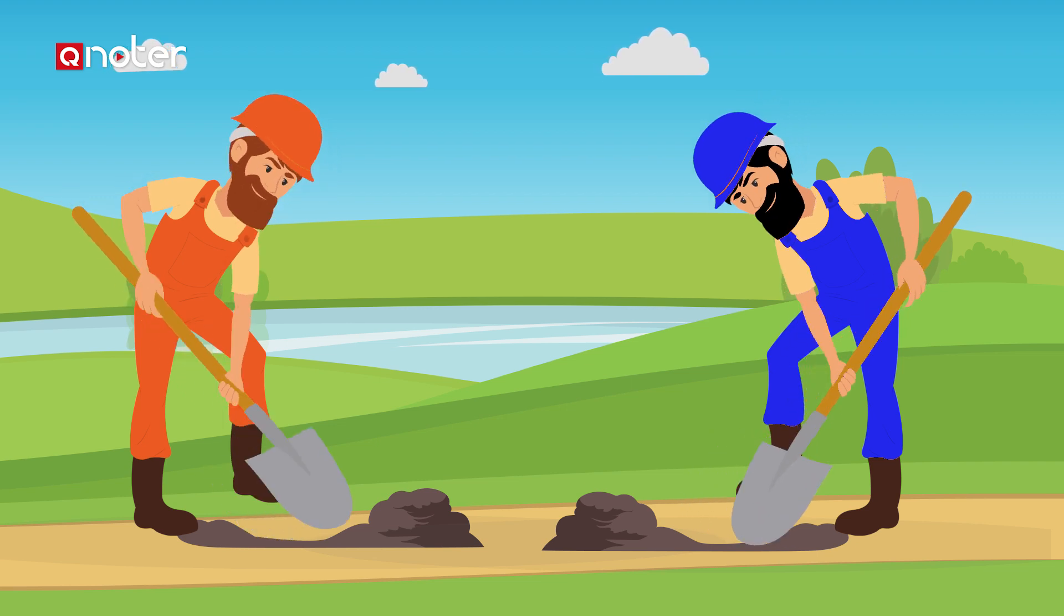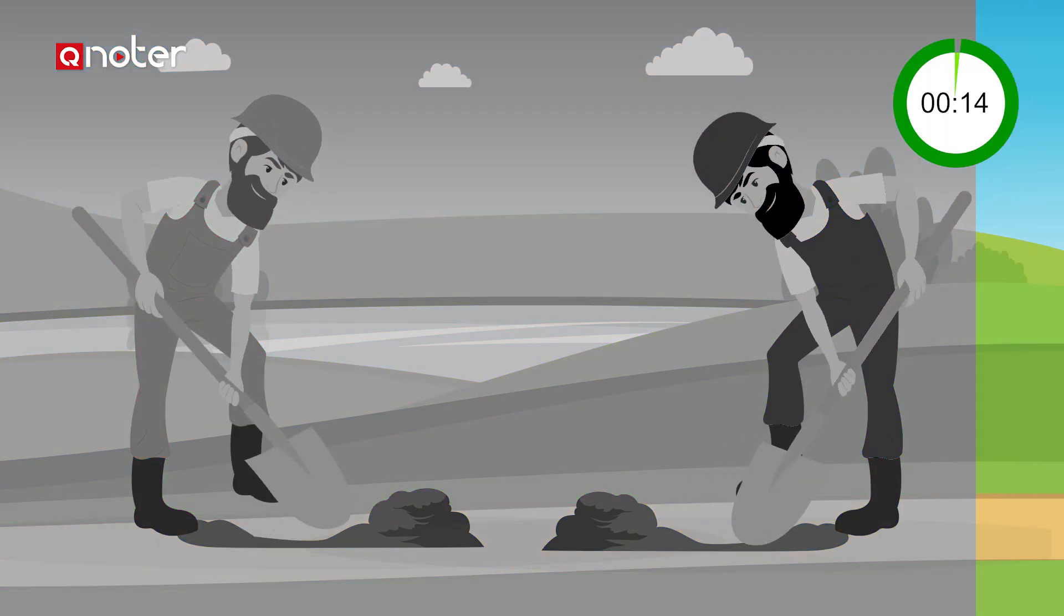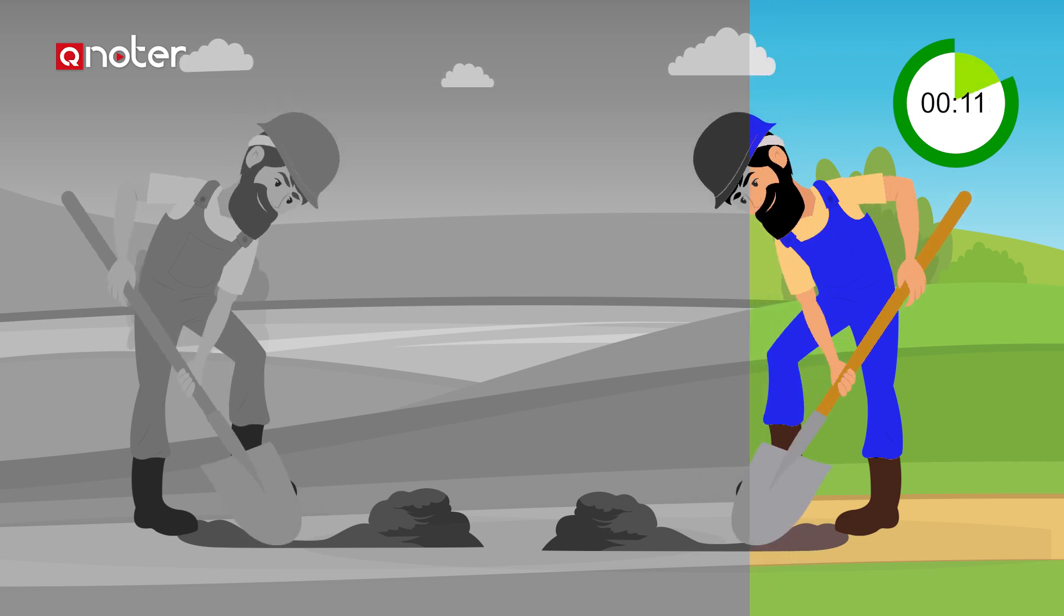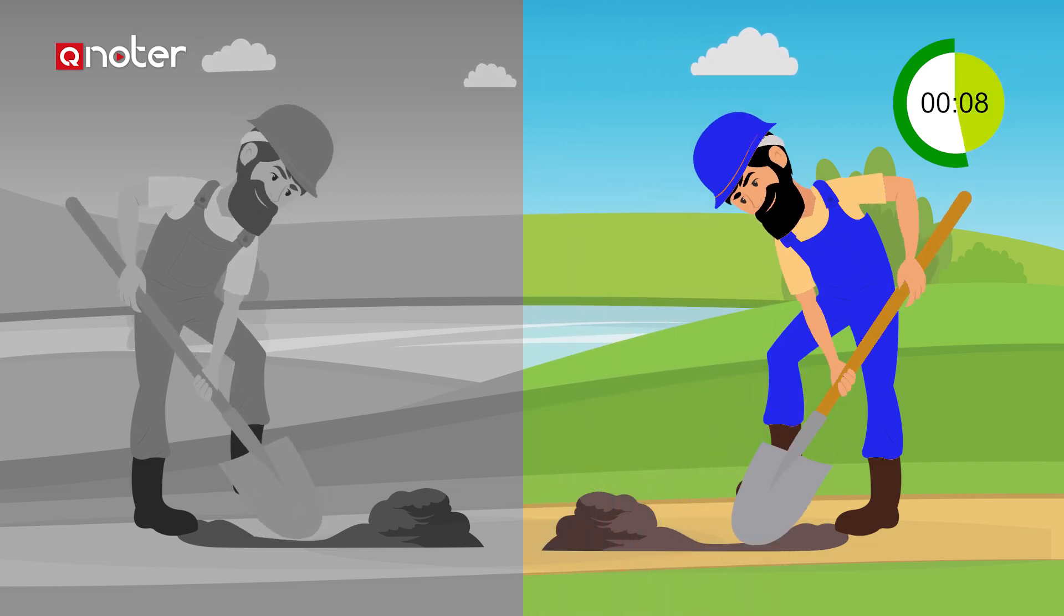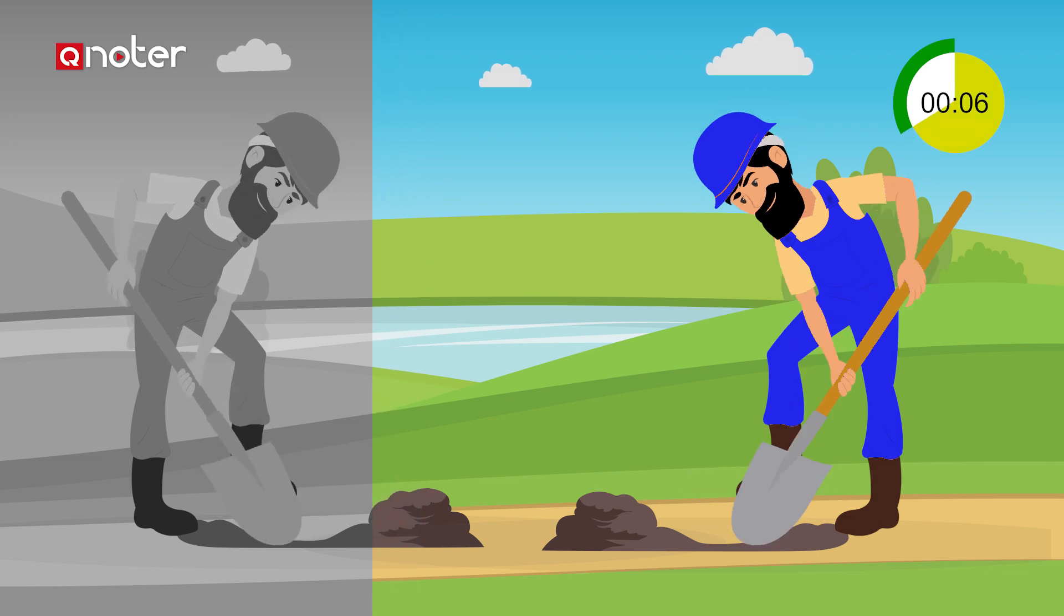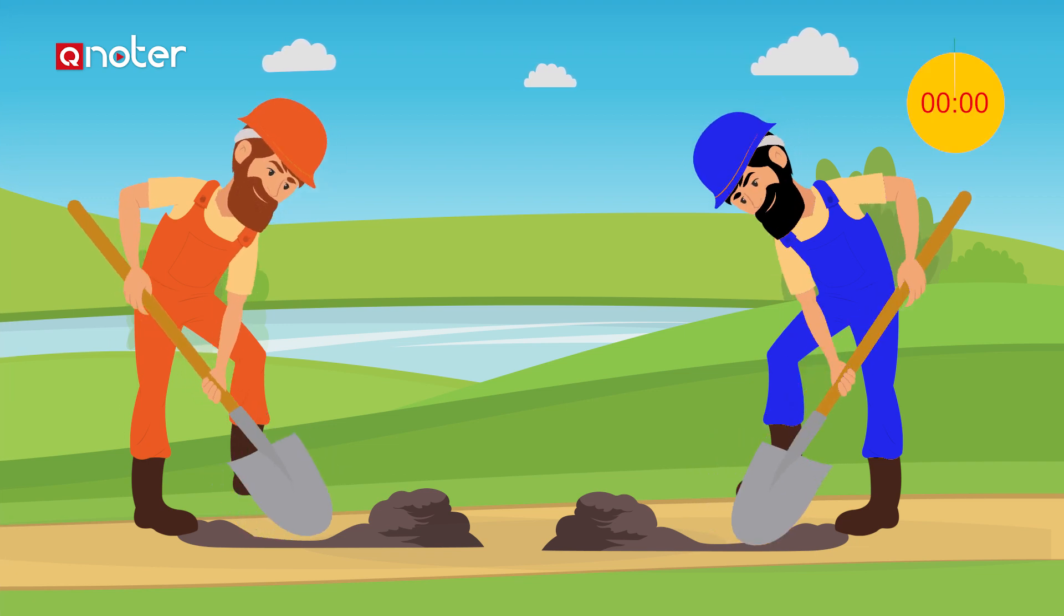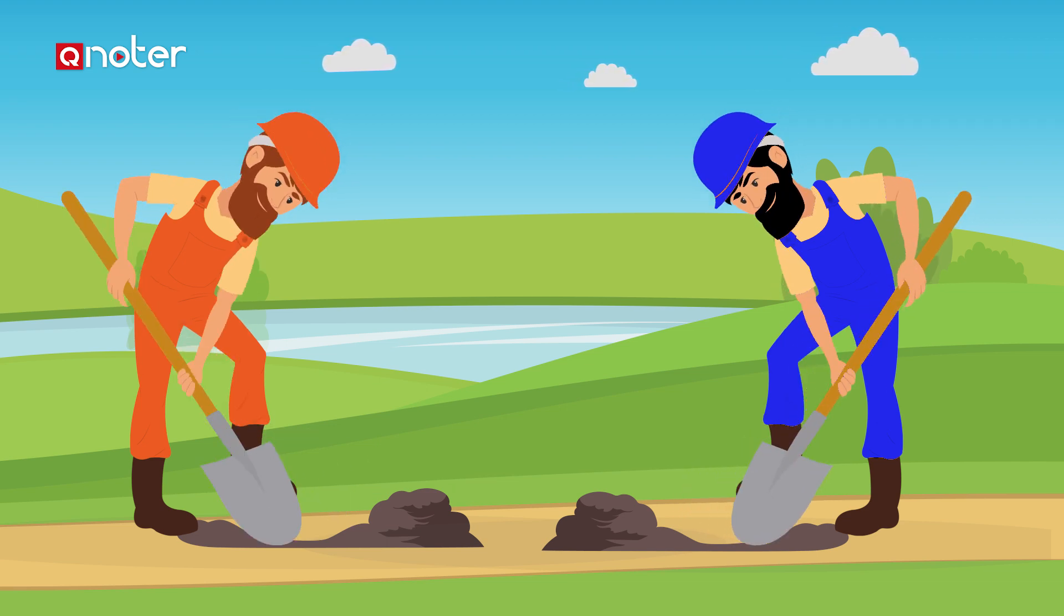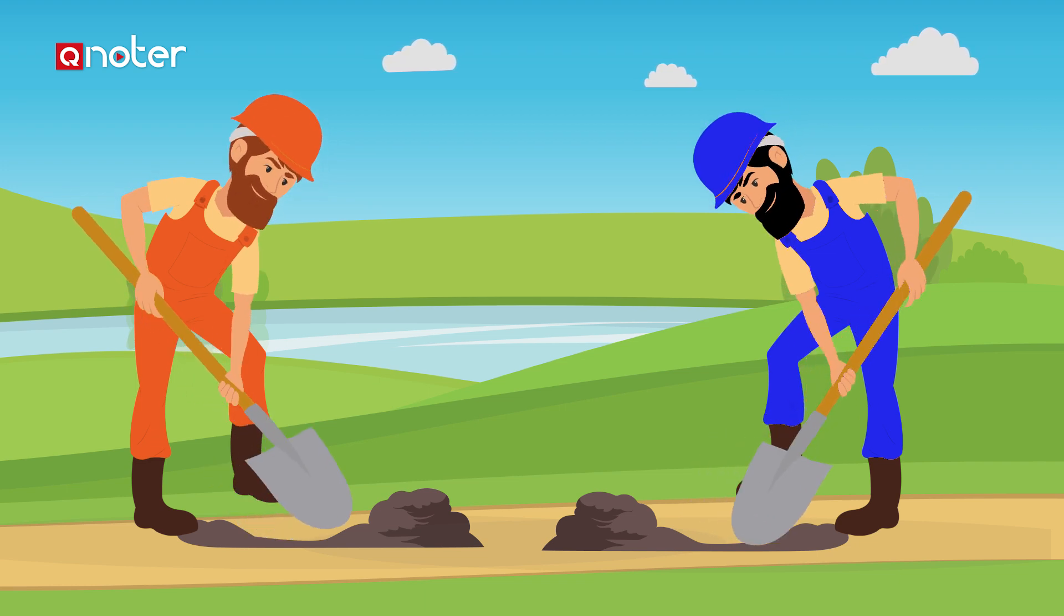Answer: 10 minutes, as the first man digs two holes per hour, the second man is digging four holes in an hour. In one hour, the two men are digging together six holes. Thus, the time of the pit if the two men worked together equals 60 minutes divided by six, equaling 10 minutes.